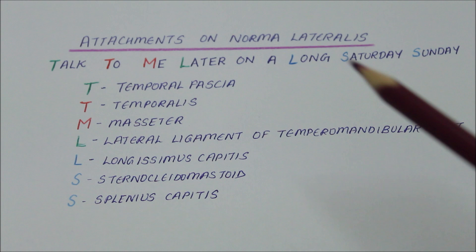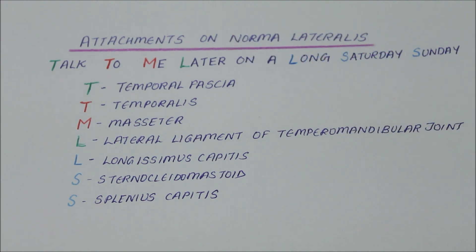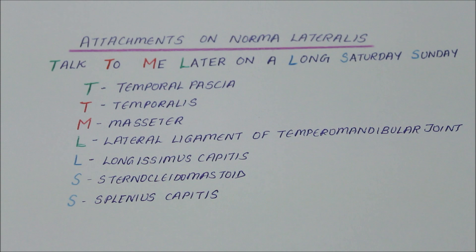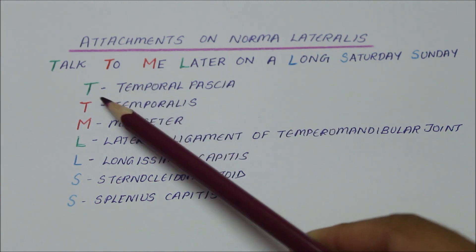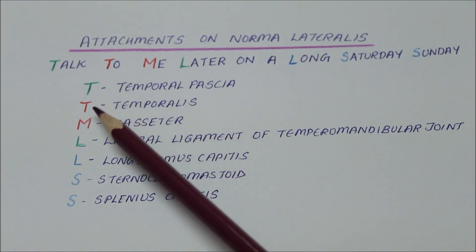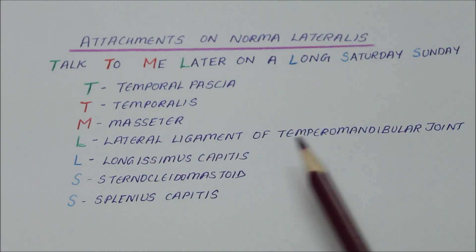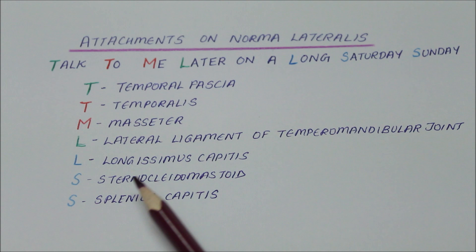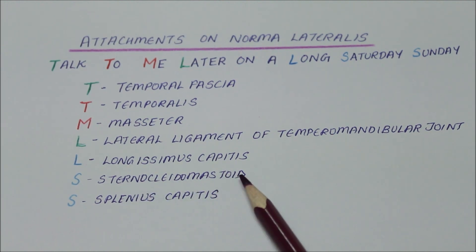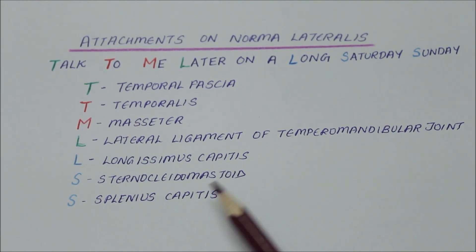An easy way to remember the attachments on the Norma Lateralis is by the sentence: 'Talk To Me Later On A Long Saturday Sunday.' The green colour indicates attachment, red indicates origin of muscles, and blue indicates insertion of muscles. T stands for the attachment of the temporal fascia, T for the origin of temporalis, M for the origin of masseter, L for the attachment of the lateral ligament of the temporomandibular joint, L for the insertion of longissimus capitis, S for the insertion of sternocleidomastoid, and finally S for the insertion of splenius capitis.